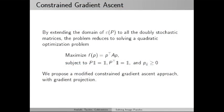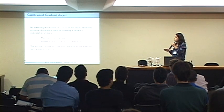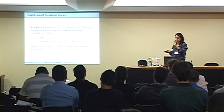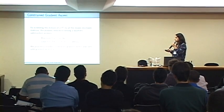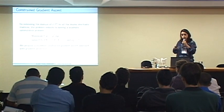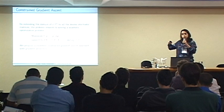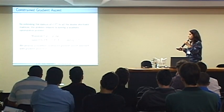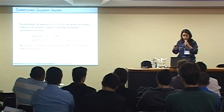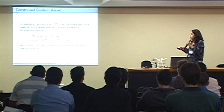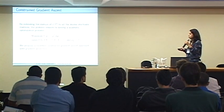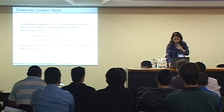We want to extend the domain of the global matching function to doubly stochastic matrices. The problem becomes maximizing P-transpose AP subject to constraints: the sum of each row must equal one, the sum of each column must equal one, and all elements must be positive. We solve this using a modified constrained gradient ascent approach with gradient projection.